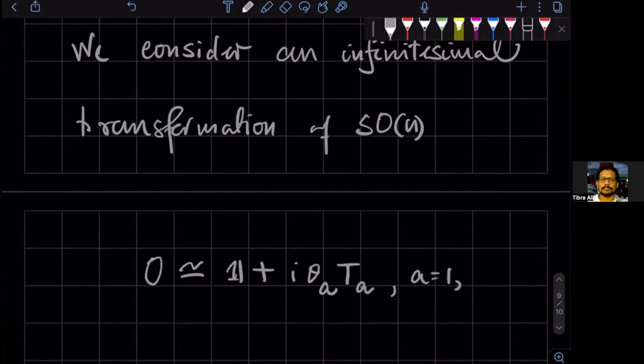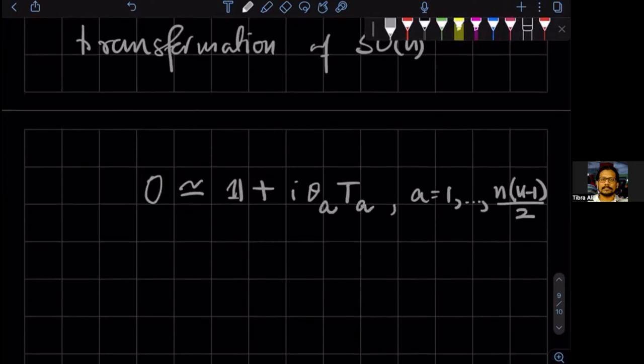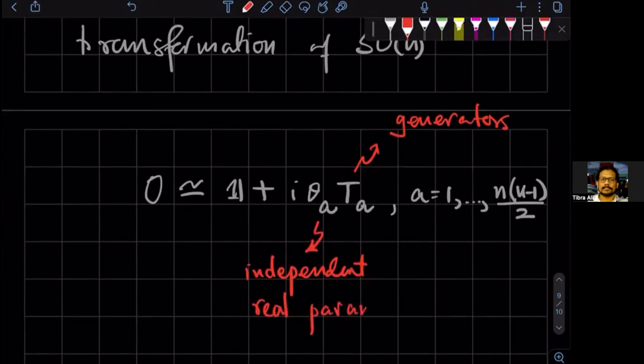So A goes from 1 to the dimension which is N times N minus 1 by 2. Is this formula understandable? These are the generators, and these are the independent parameters.